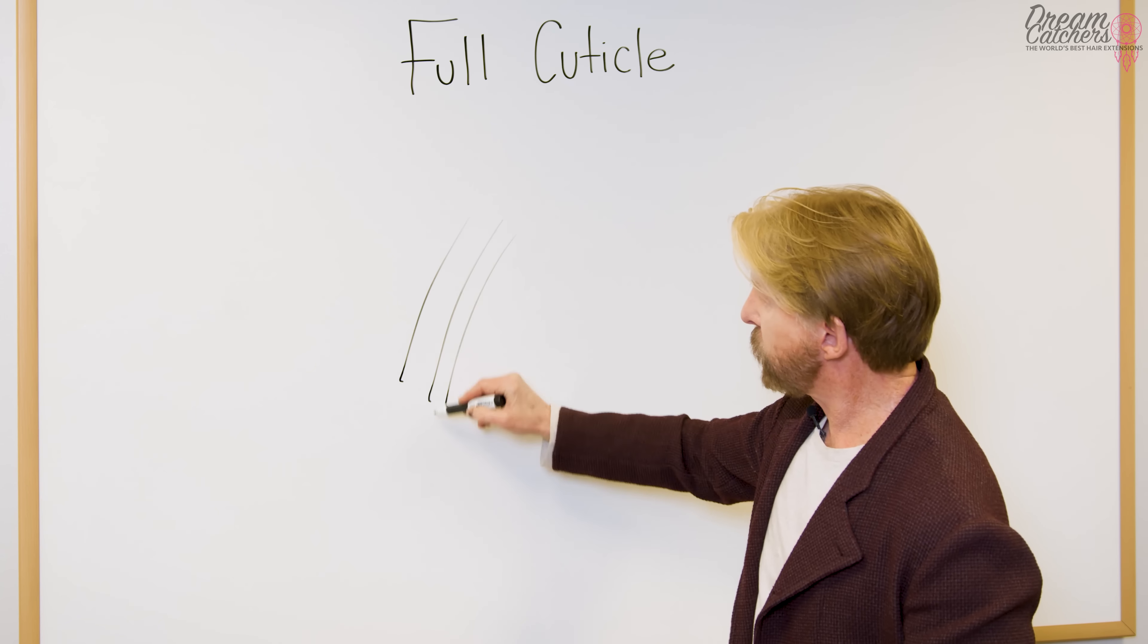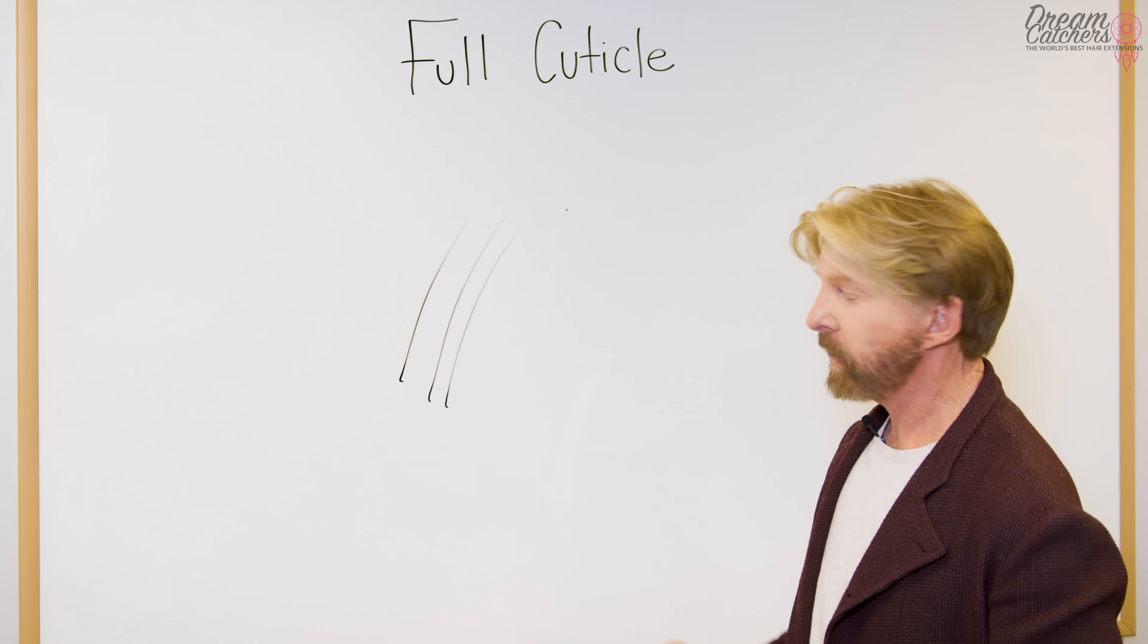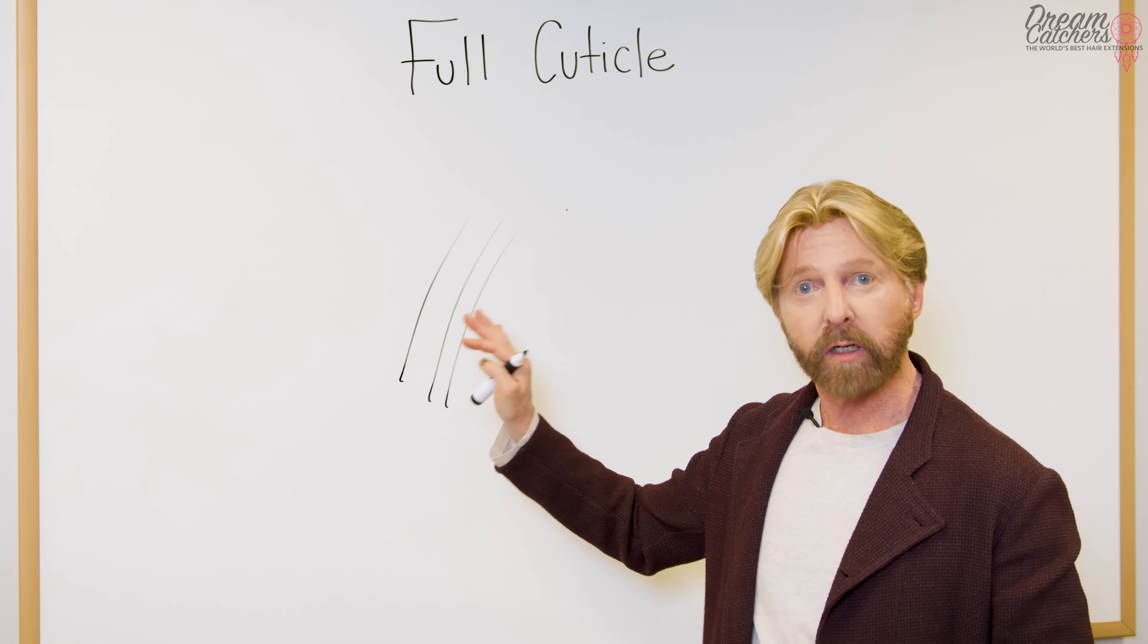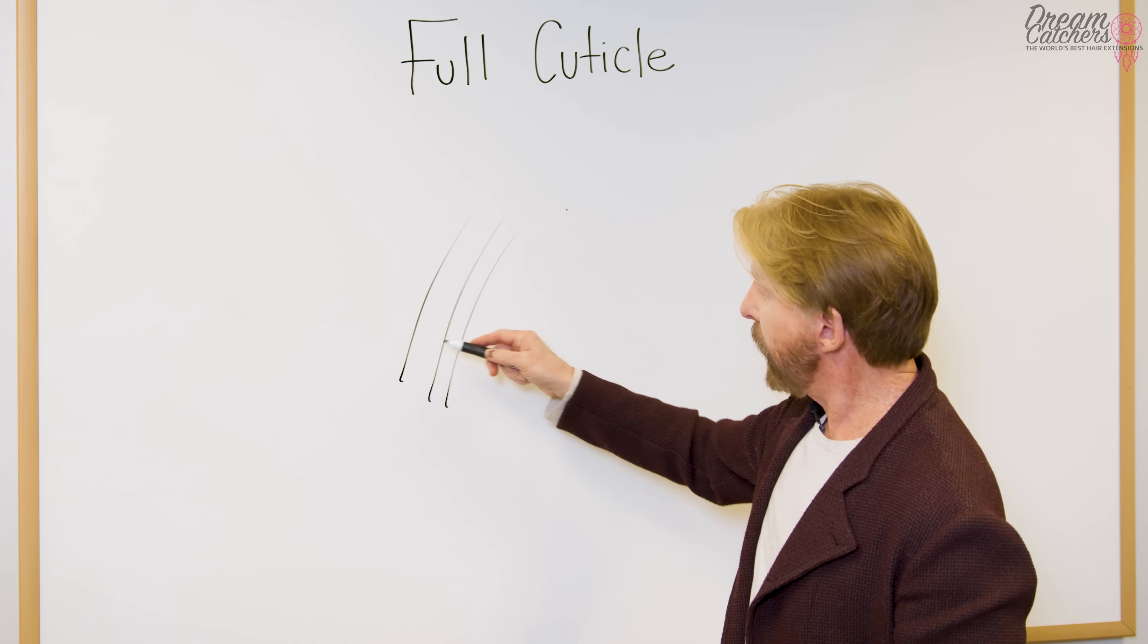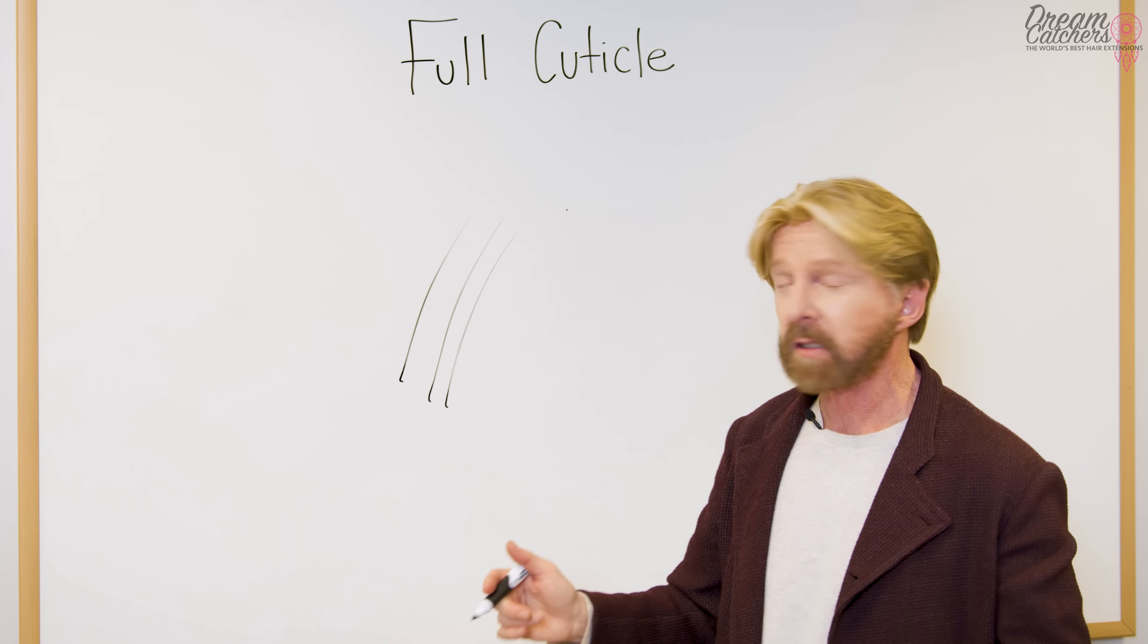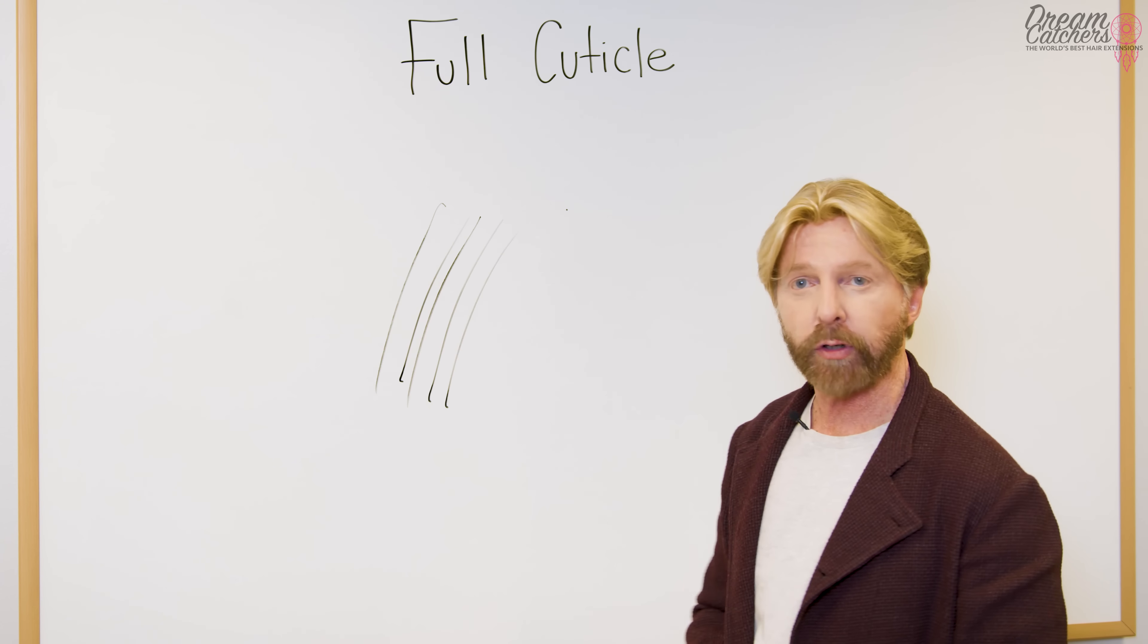This is now an example of a hair that has been stripped of the cuticle. Again, it doesn't matter how gentle the process is, it's still going to strip the cuticle. So in other words, it doesn't matter if this hair is going to go in any direction. It really doesn't matter whether it's going up or down. That hair is stripped.